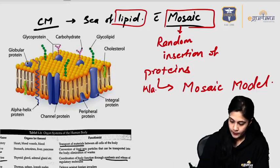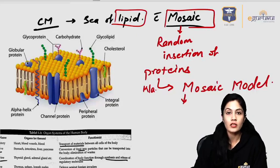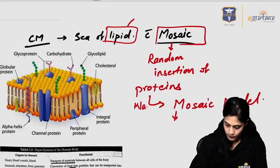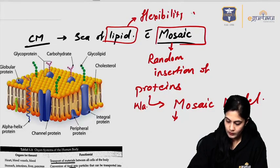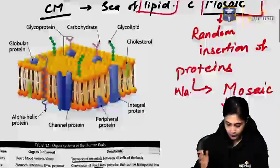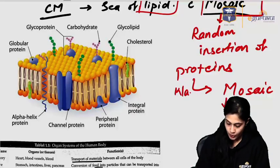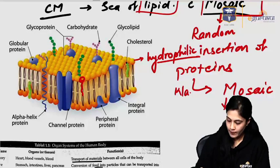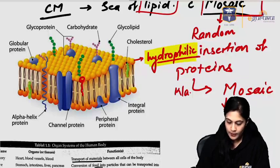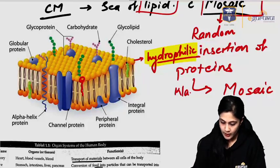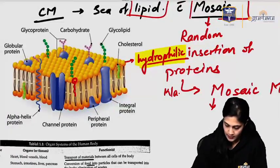Why is the mosaic model arranged this way? The lipid is more important because it provides flexibility and fluidity to the membrane. In the diagram, phospholipids have two ends: the head end, which is hydrophilic — meaning water-loving, it attracts water — and the tail, which is hydrophobic, meaning it repels water. The tail is always hydrophobic.